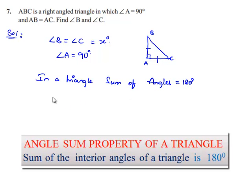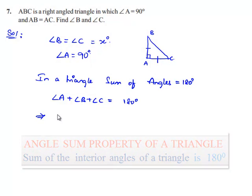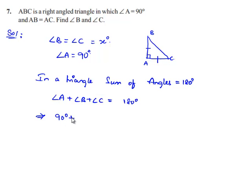We can say angle A plus angle B plus angle C equals 180 degrees, which implies 90 degrees plus x degrees plus x degrees equals 180 degrees.